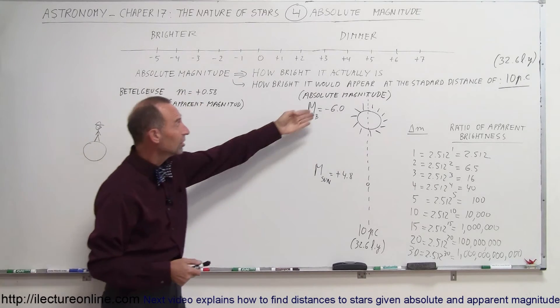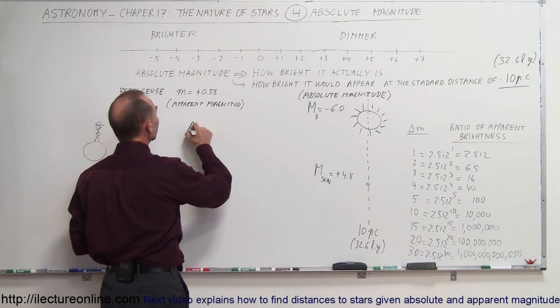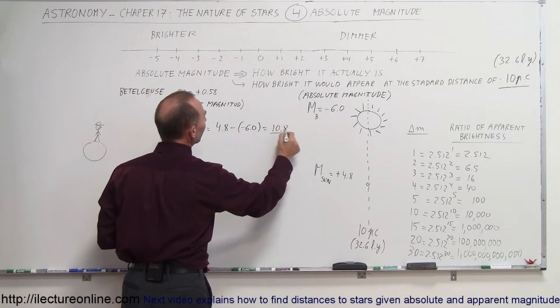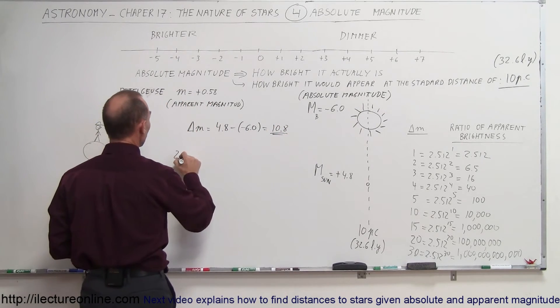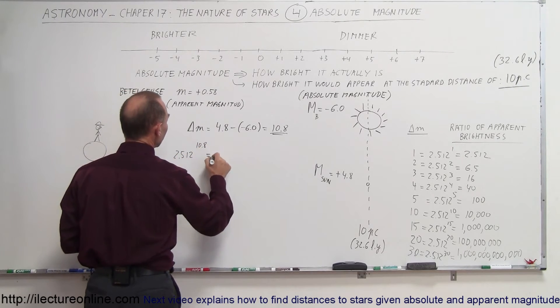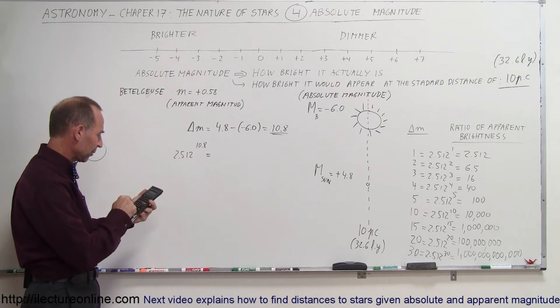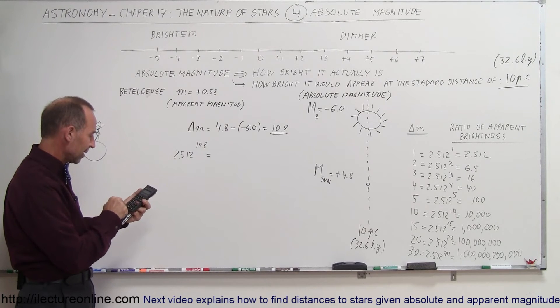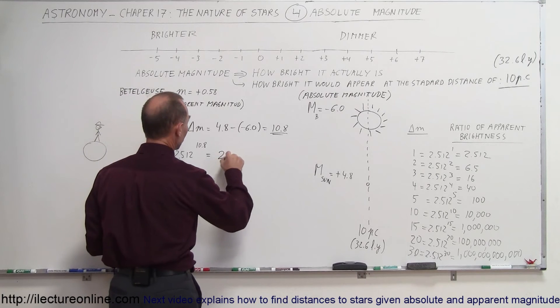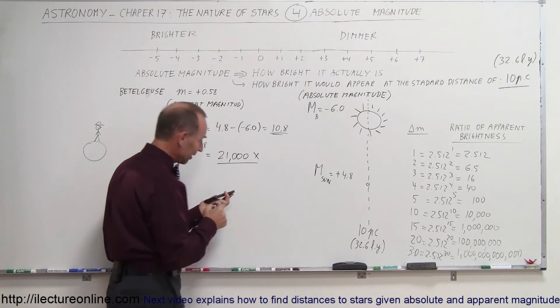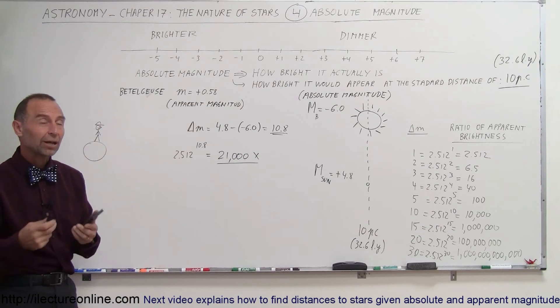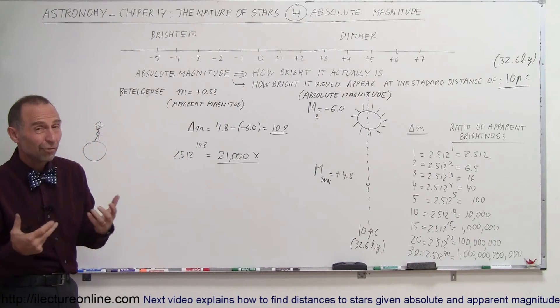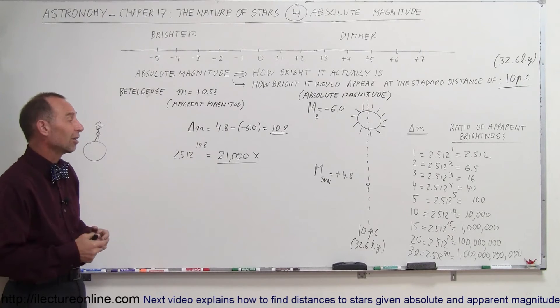Now, how much brighter is that? So, using these numbers right here, the delta M would be equal to 4.8 minus a minus 6.0. That would be about a 10.8 difference in the magnitudes. Then, what we do with that is, we take 2.512 raised to the 10.8 power. With a calculator, we'll find out really quick. 2.512 raised to the 10.8 power, it's about 21,000 times. So, that means that Betelgeuse is 21,000 times as bright as the sun. If you could put them side by side, you would need 21,000 suns to put out as much light as Betelgeuse. So, there you can see that Betelgeuse is indeed a very bright star, partially because it's a huge star. It's enormous in size and, therefore, puts out a lot more light.